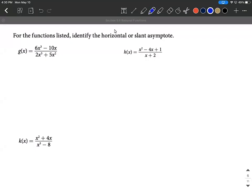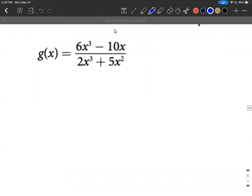Given some rational functions, we want to figure out do they have horizontal asymptotes or slant asymptotes or maybe none. All right, so as we take a look here, let's zoom in. We have g of x is 6x cubed minus 10x over 2x cubed plus 5x squared.